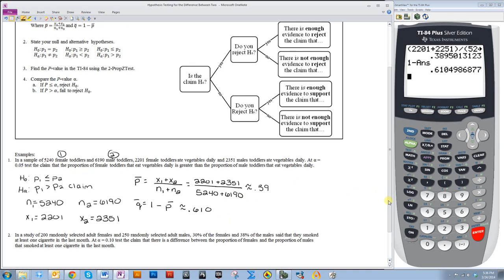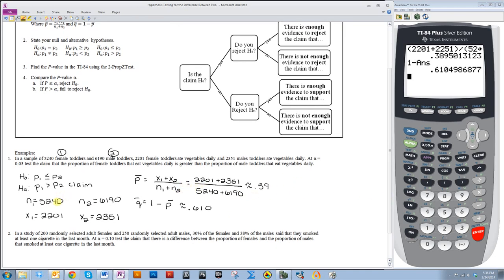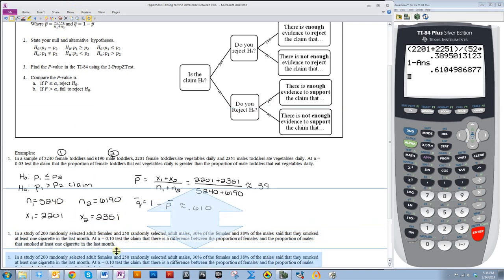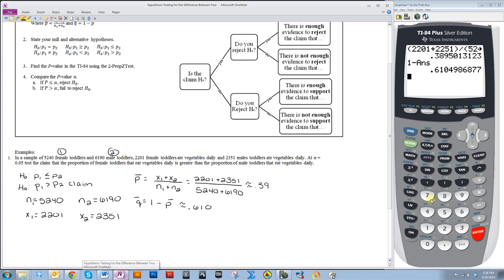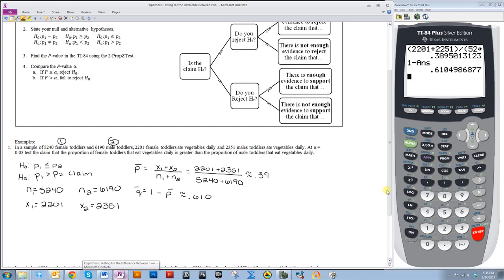So 2,201 plus 2,351 over 5,240 plus 6,190. P-bar is approximately equal to 0.39 or 39%. Q-bar is 1 minus p-bar, so I can just do 1 minus the previous answer, which is approximately equal to 0.610. So if you do 39% of a number this big, or 61% of a number this big, it's definitely going to be greater than 5, so you don't really need to test it with this one.